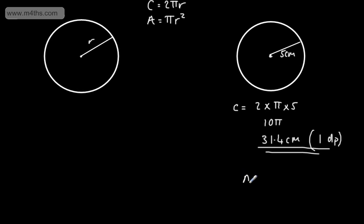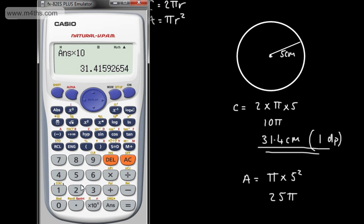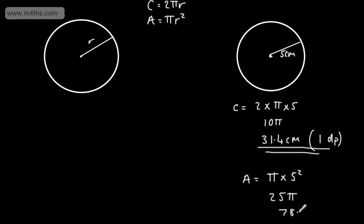If we wanted to find the area, we use πr². We multiply pi by the radius squared. The radius squared is 5 squared, which is 25. So we'd have 25 times pi. In the calculator, we enter 25 then shift pi. 25π gives us 78.5, so the area is 78.5 centimetres squared, given to one decimal place.